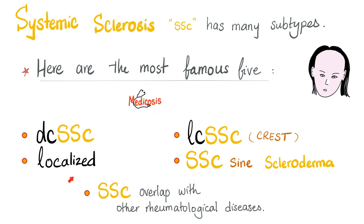Localized scleroderma — please do not say 'localized systemic sclerosis.' If it's localized, it cannot be systemic. Systemic sclerosis sine scleroderma — 'sine' means without, so systemic sclerosis without scleroderma — the viscera are affected but the skin is intact. Then you have systemic sclerosis that overlaps with other rheumatological diseases such as lupus, dermatomyositis, etc.